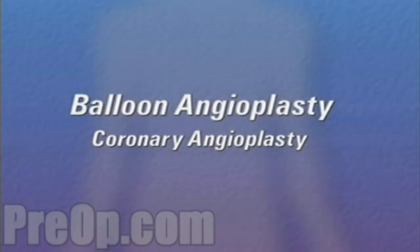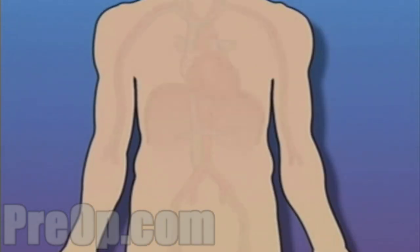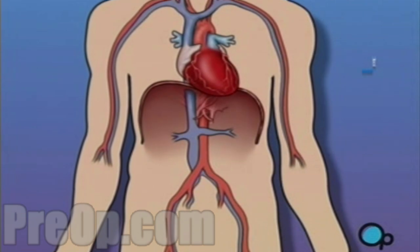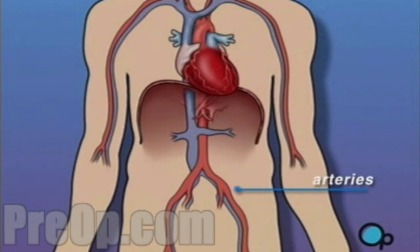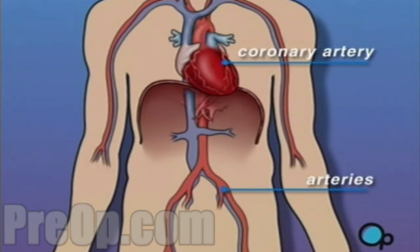Your doctor has recommended that you undergo a balloon angioplasty, but what does that actually mean? The heart is located in the center of the chest. Its job is to keep blood continually circulating throughout the body. The blood vessels that supply the body with oxygen-rich blood are called arteries. The arteries that supply blood to the heart muscle itself are called coronary arteries.